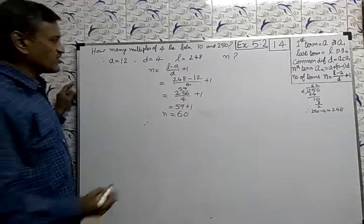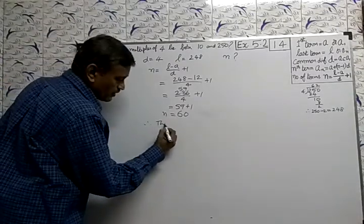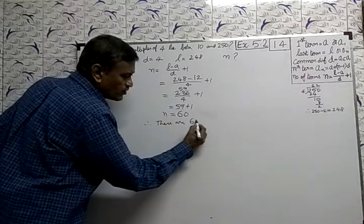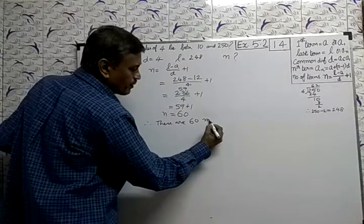There are 60 multiples of 4 between 10 and 250.